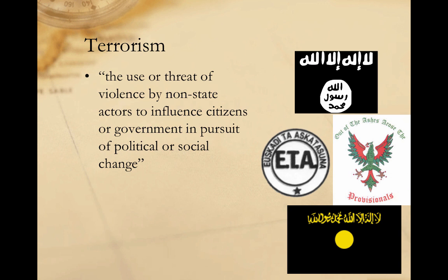Despite the debates over definitions, terrorism includes a wide variety of actors in search of competing political goals. Some of the most well-known include al-Qaeda, responsible for the September 11, 2001 terror attacks against the United States, which sought to force an American withdrawal from the Middle East; the Islamic State, which seeks to establish a caliphate across the Middle East and North Africa; the Irish Republican Army, which sought to expel Britain from Northern Ireland; and the Basque Fatherland and Liberty, or ETA, which seeks to establish an independent Basque state in Northern Spain.